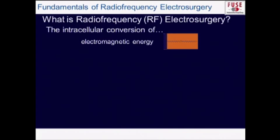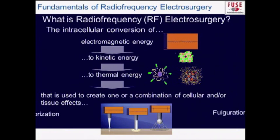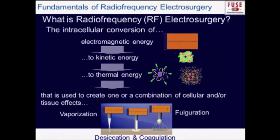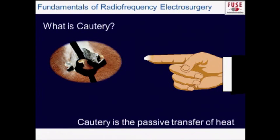RF electrosurgery is the intracellular conversion of electromagnetic energy to kinetic energy to thermal energy — two conversions occur. That thermal effect can then manifest in tissue to either vaporize it, coagulate it, or fulgerate it. It is not cautery. Cautery is the passive transfer of heat — like lighting a match or branding a bull. With radiofrequency electricity, we are actually heating the tissue, which then heats the instrument.